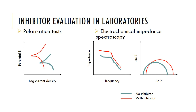The semicircle for the sample without inhibitor is related to the charge transfer resistance and the double layer capacitance. It can also be seen that the sample with inhibitor has a greater radius of the semicircle as compared to the sample without inhibitor.